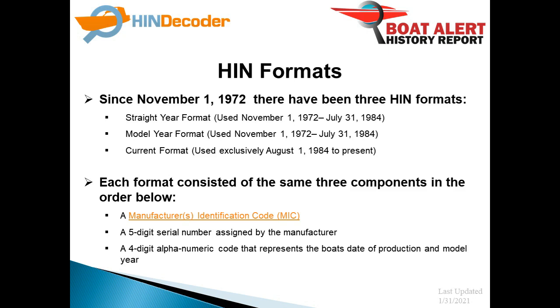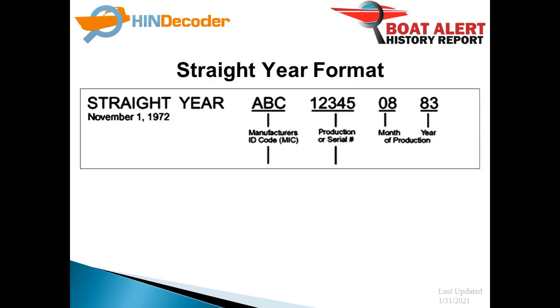Let's talk about the first format. The straight year format is the simplest HIN type. The HIN always starts with the manufacturer code, then the serial number, then the month and year.